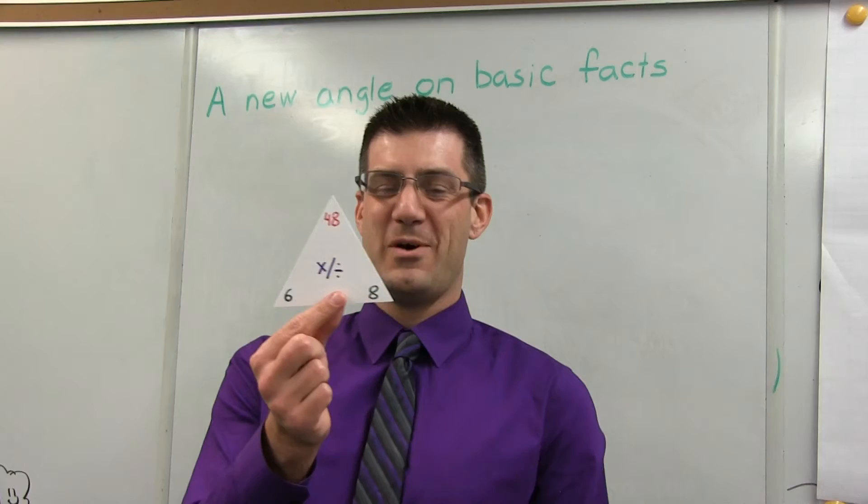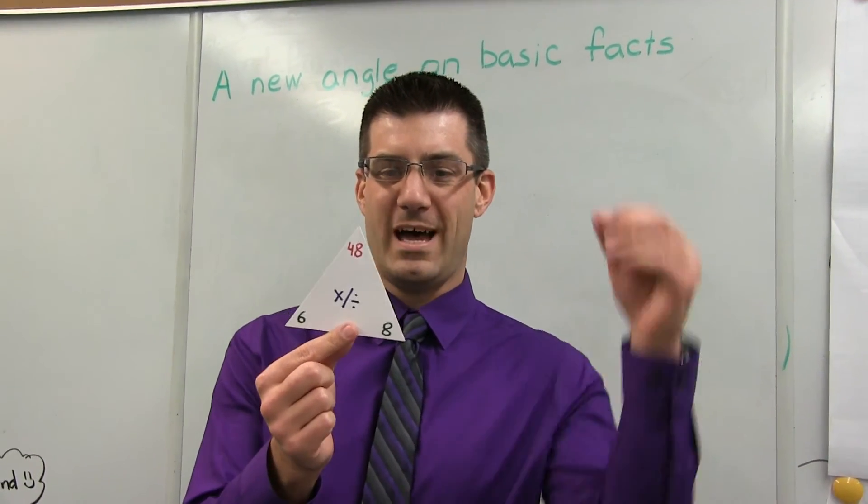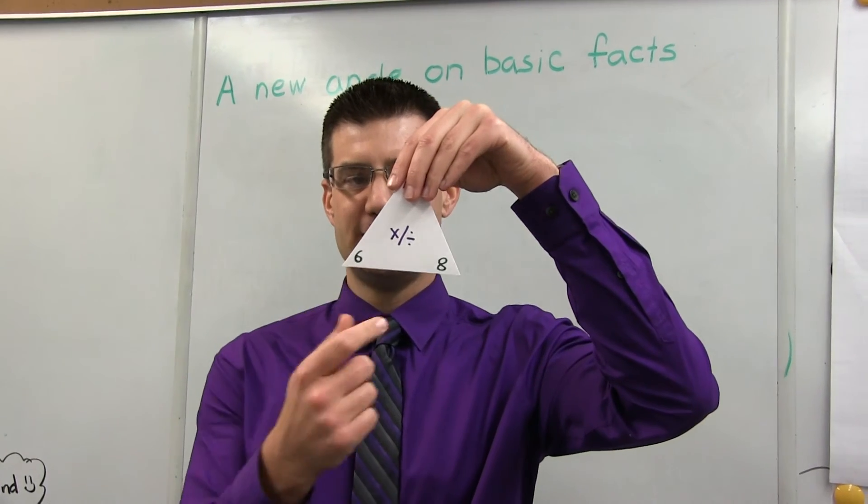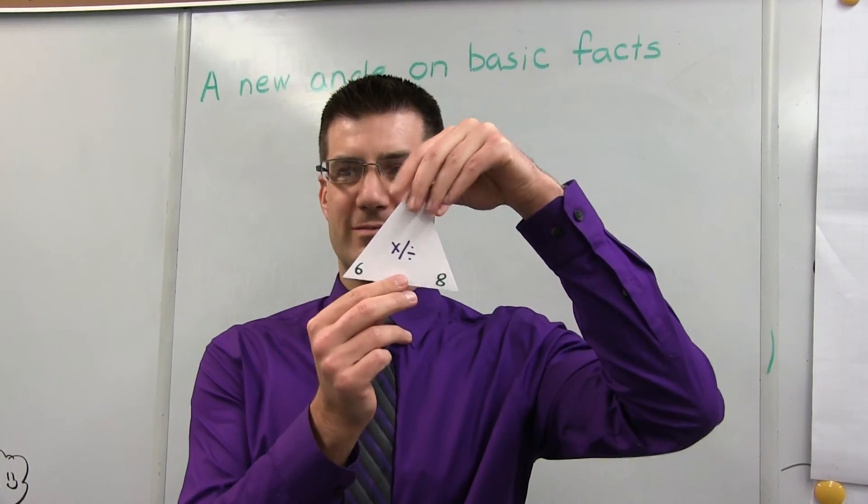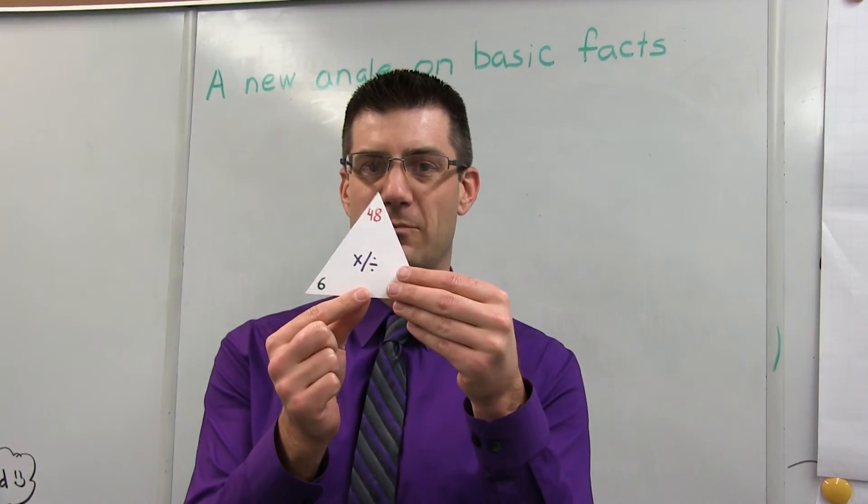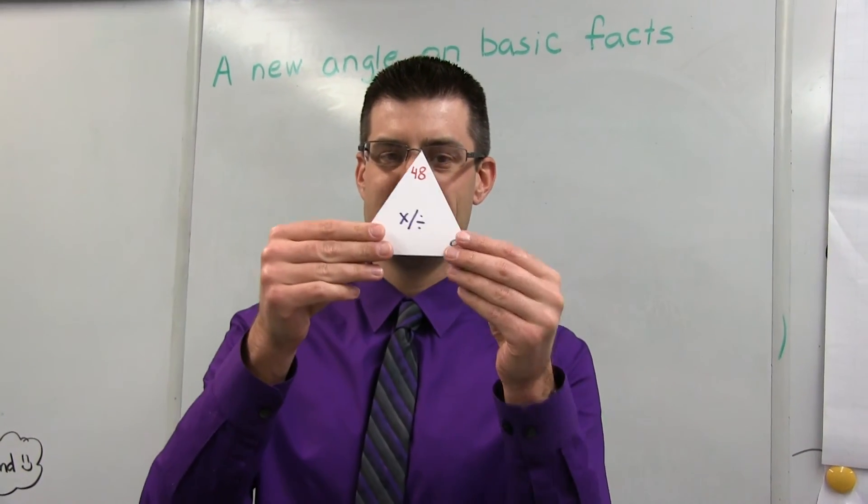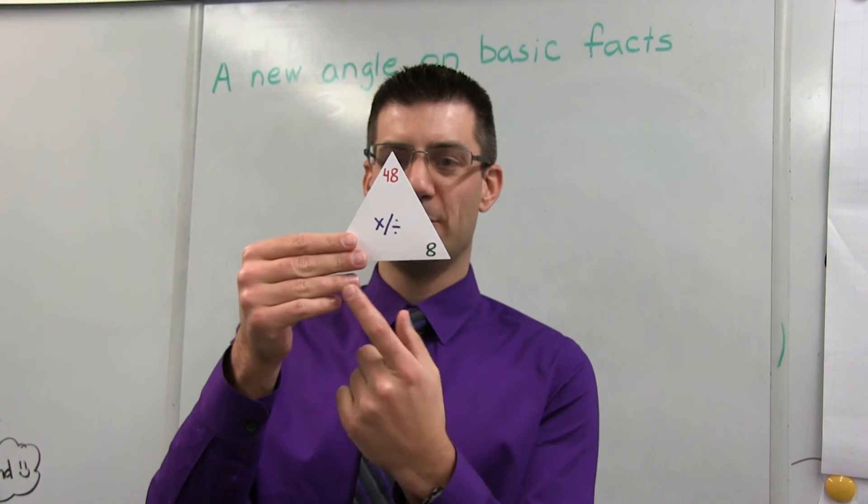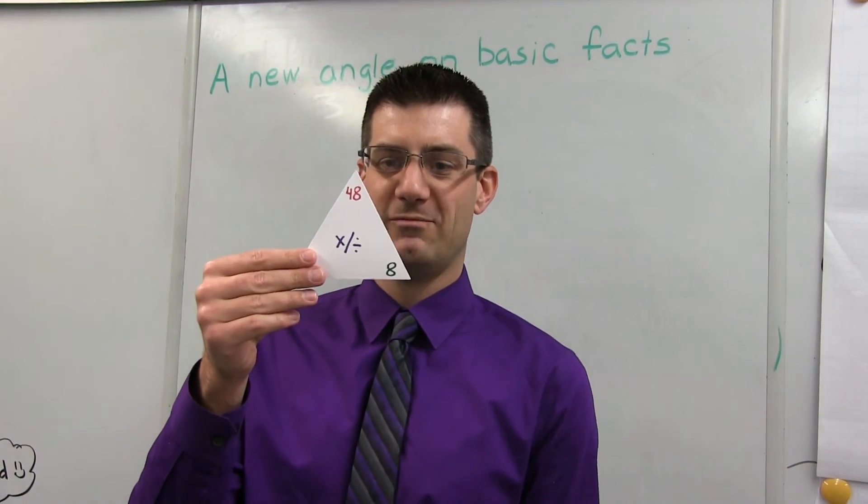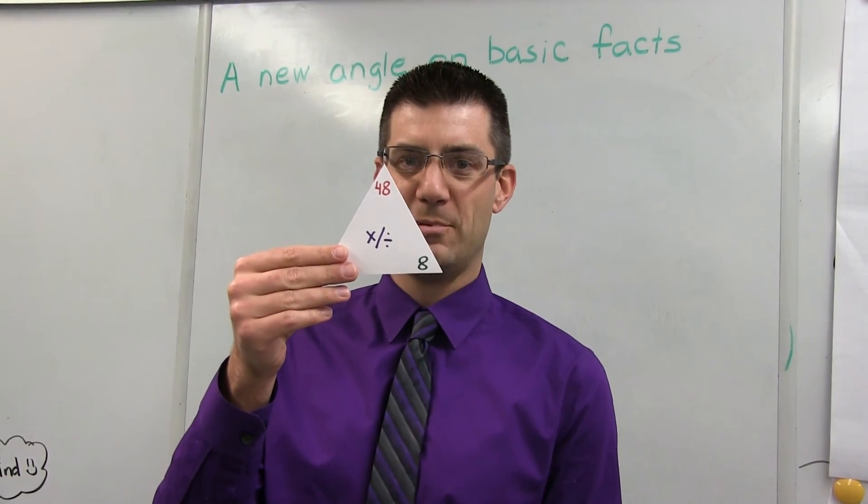Same thing with our multiplication and division. I could either use it to practice my multiplication facts. 6 times 8 would give me 48. Or I could relate it to division and cover up one of my factors. So if I knew 8 groups of something equals 48, that is basically the same thing as thinking 48 divided by 8 would be 6.